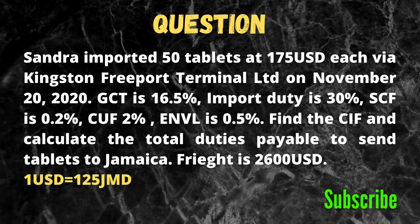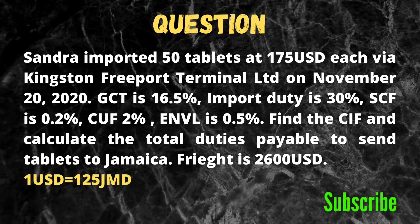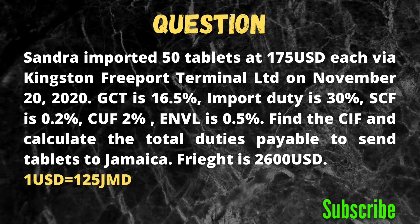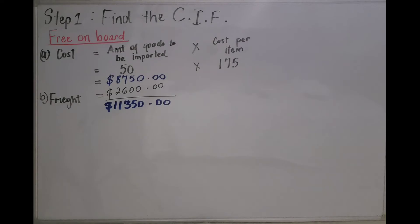We are calculating the import duties and taxes for 50 tablets. Step 1: we're going to find the cost, insurance and freight. The cost equals the amount of goods to be imported multiplied by the cost per item. We have 50 tablets and each tablet costs $175, so 50 multiplied by $175 equals $8,750.